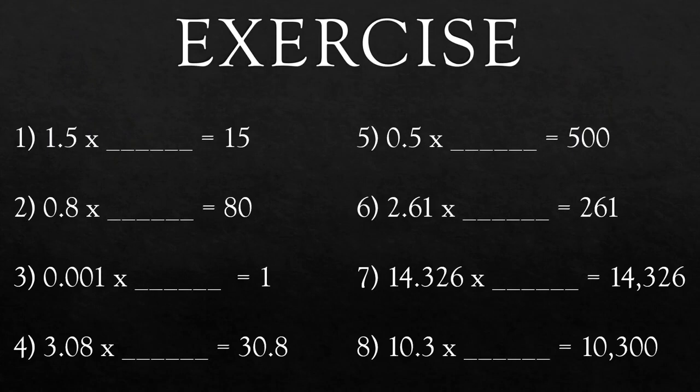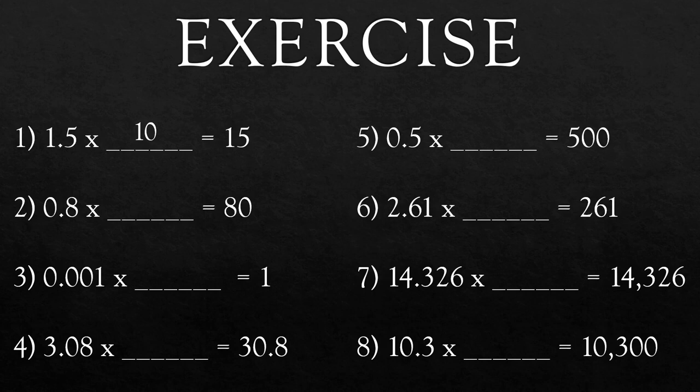Let's practice. Multiply by 10, 100 or 1000 and make this statement true. Question 1: 1.5 × ___ = 15. How many places will you shift in 1.5 to get 15? 1. So what will you multiply? Yes, the answer is 10. Question 2: 0.8 × ___ = 80. How many places will you shift in 0.8 to get 80? 2. So what will you multiply? Yes, the answer is 100.